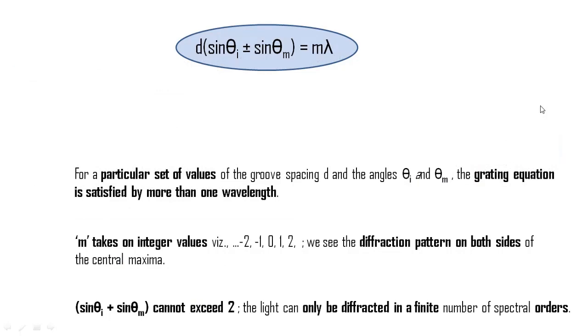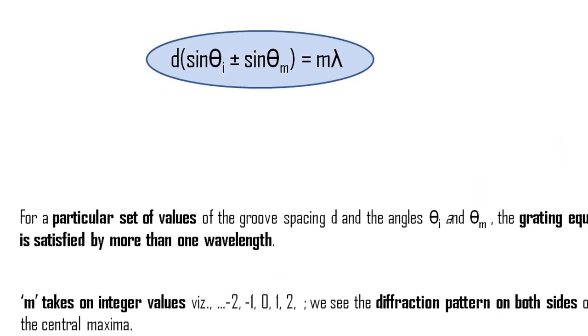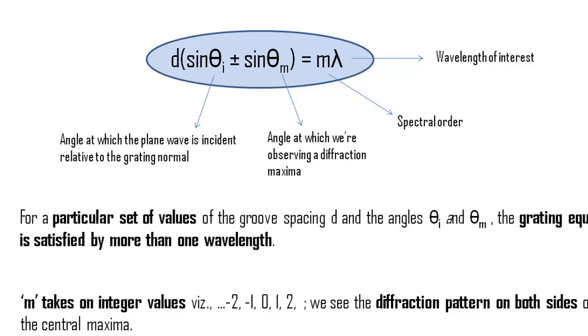Let's pause and explore the grating equation for a while. Lambda is the wavelength under consideration. M is what we call the spectral order, or simply the diffraction order. Theta sub m is the angle at which we are observing the diffraction maxima. Theta sub i is the angle at which the incident plane wave meets the grating relative to the grating normal and d is the spacing between two adjacent grooves.